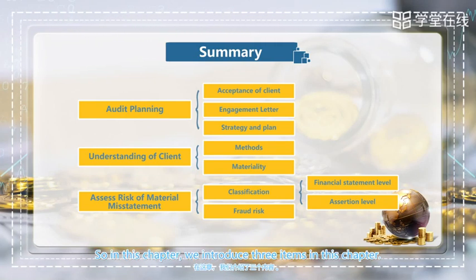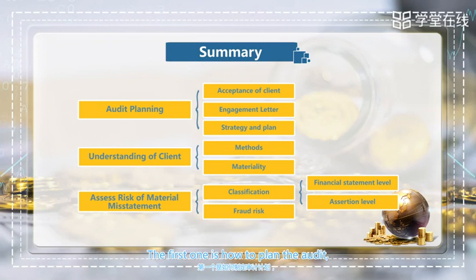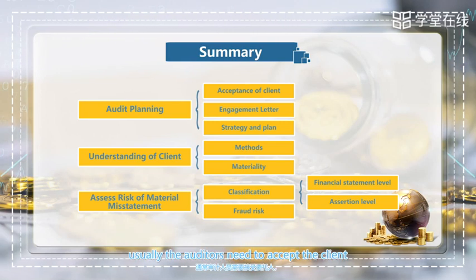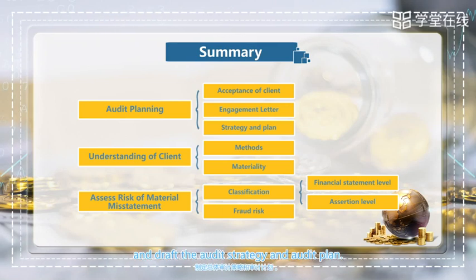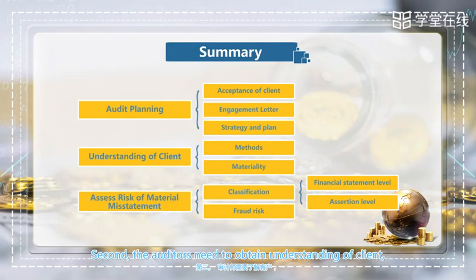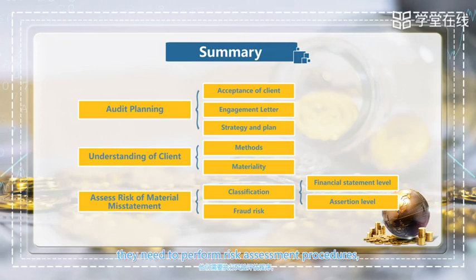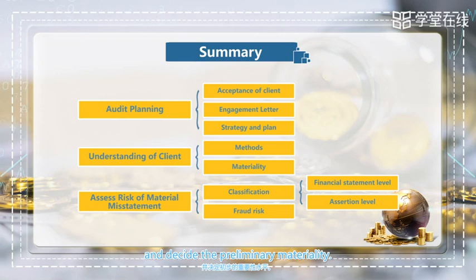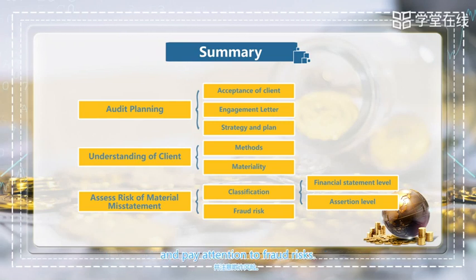In this chapter, we introduced three items. The first is how to plan the audit — auditors need to accept the client, sign the engagement letter, and draft the audit strategy and audit plan. Second, the auditor needs to obtain an understanding of the client by performing risk assessment procedures and deciding the preliminary materiality level. Third, auditors will assess the risk of material misstatements and pay attention to fraud risks.